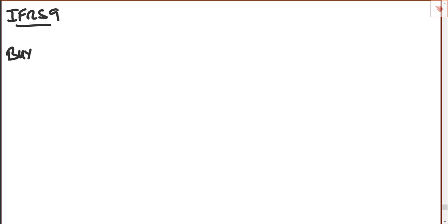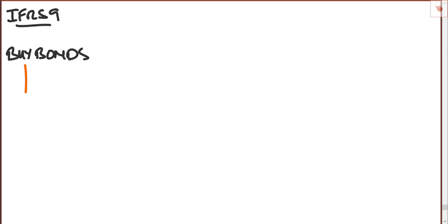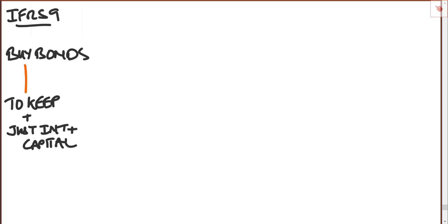Let's start with financial assets. Let's say that we buy some bonds — we've got to decide what we're going to do with them, and that will determine the treatment. For example, if you buy some bonds and you intend to keep them, and the bond just has interest and capital, well then that's going to be treated at amortized cost. You're really asking: what's your business model? If the business model is to keep them, and the bond is just interest and capital, then the treatment is amortized cost.